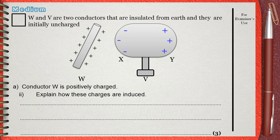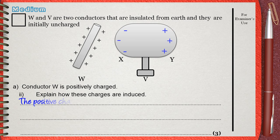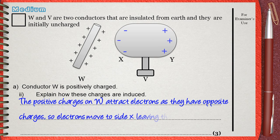Question A double I: explain how these charges are induced. As we explained before, we can say that the positive charges on W attract electrons as they have opposite charges, so electrons move to side X, leaving the positive protons behind at side Y.